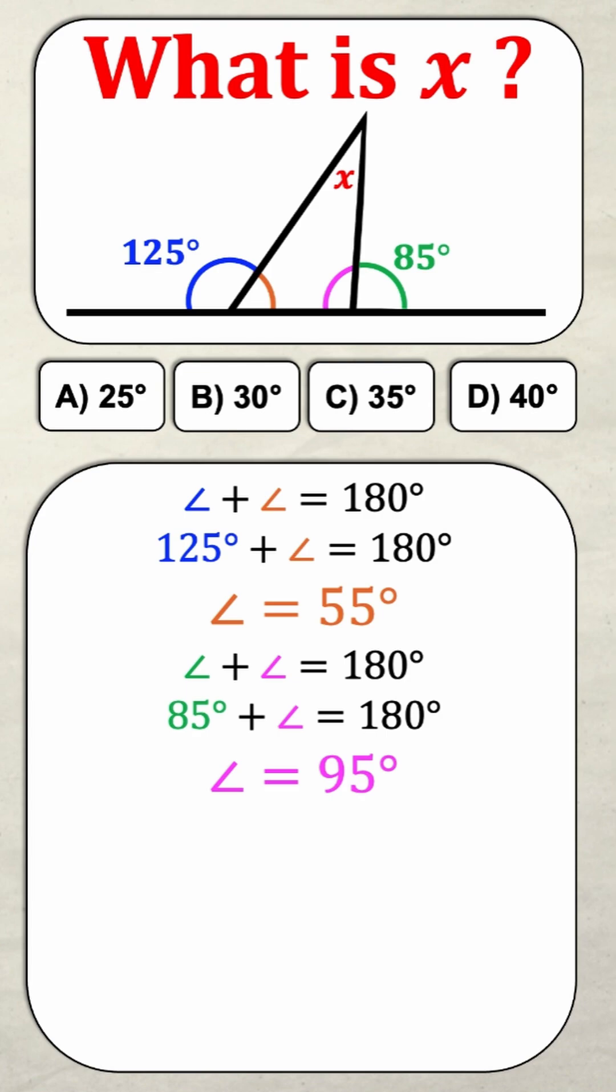Now we're almost finished because remember, the interior angles of a triangle sum up to 180 degrees. What this means is that the orange angle plus the pink angle plus x should sum to 180. But I know the orange and pink angles, so I'm going to substitute them in.